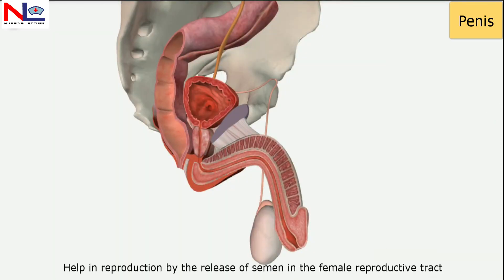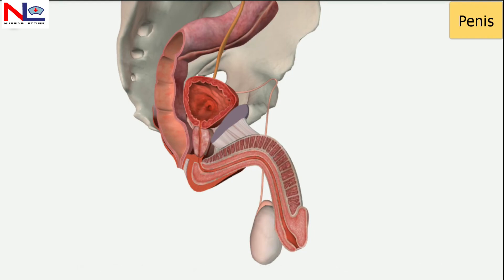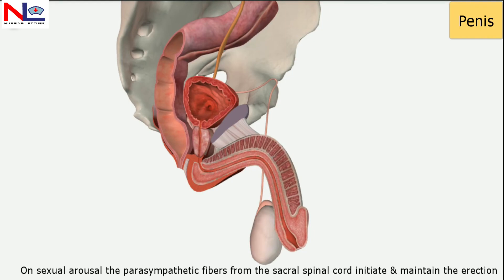On sexual arousal, the parasympathetic fibers from the sacral spinal cord initiate and maintain erection.